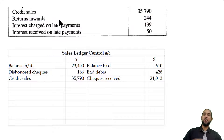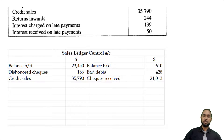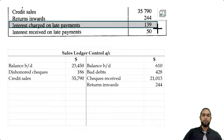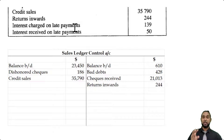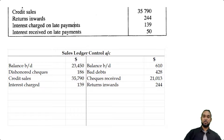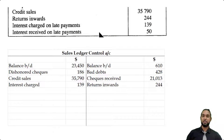Returns inwards of 244: when debtors return goods they previously bought on credit, they no longer have to pay for those goods, so the asset decreases — recorded by a credit. Interest charged on late payments: if debtors don't pay on time, a contract clause may require interest, meaning they owe us more money, increasing the asset — debit. When they pay us the interest, it reduces what they owe us, going on the credit side.